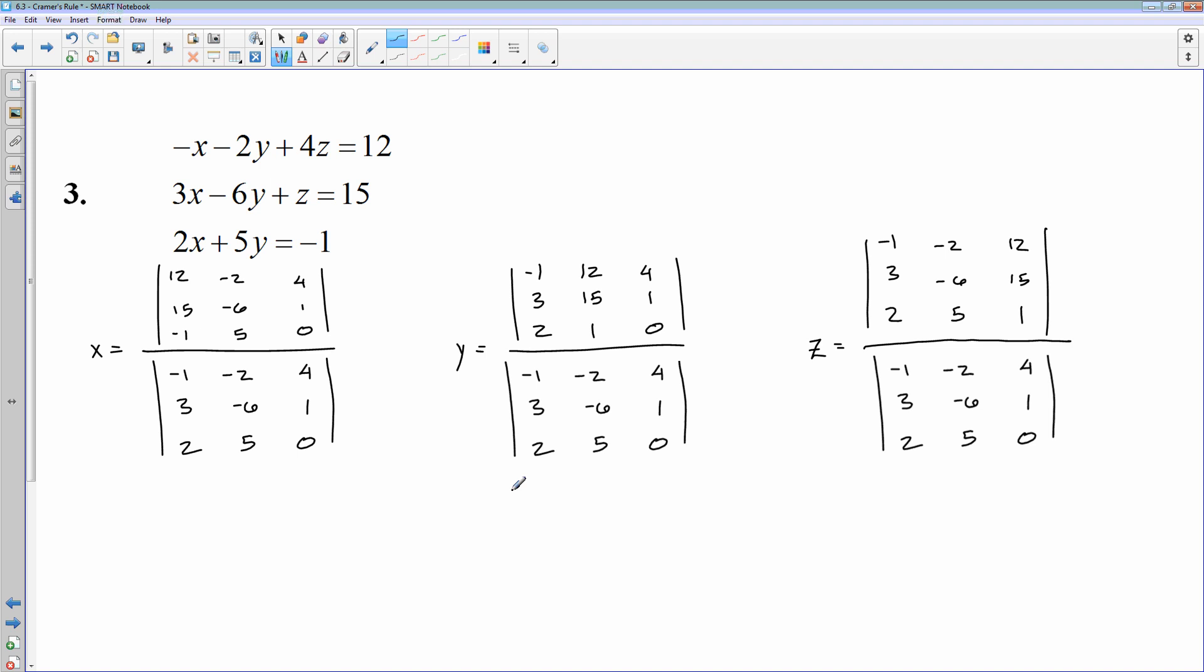Now these problems are a complete pain because now we have to do the determinant of four different matrices. We have the denominator, and then we have the three different numerators. And determinants of a 3 by 3, while they're not difficult, they're just time consuming. So what I will probably do on a test is I'll probably simply say use Cramer's rule to solve for Y, or Cramer's rule to solve for X. Because if you can show me that you can do Cramer's rule correctly for one of them, then you can do the other two. So what I'll do, I'll solve for Y by hand, and then I'm going to do the other two in a calculator.